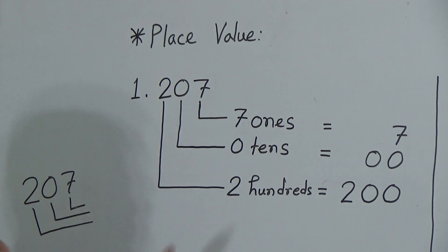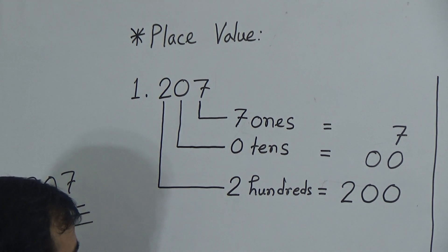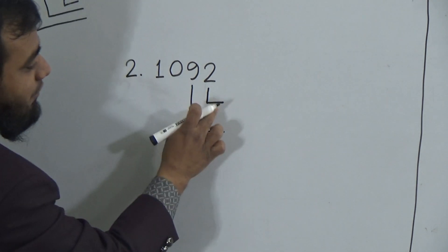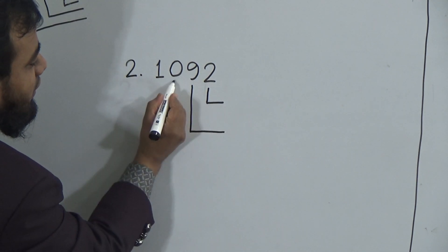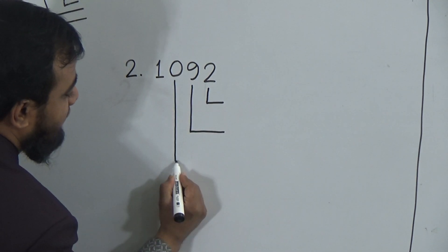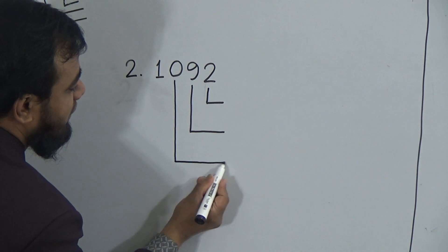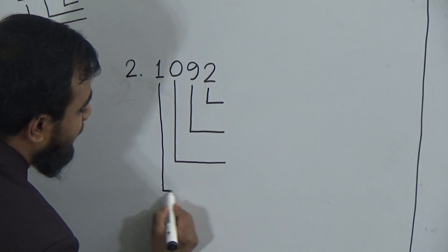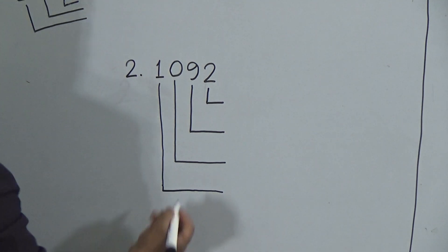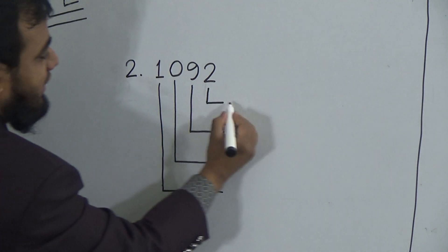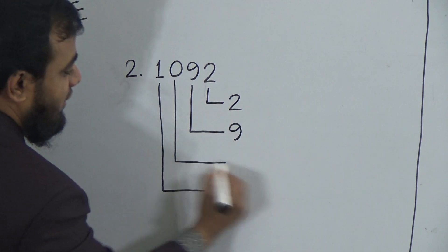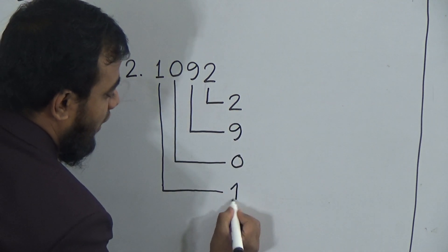Similarly, we will solve number 2 and number 3. First draw the lines nicely, giving gaps between them so we can write down the words. This line indicates digit 2, this line indicates digit 9, this line indicates 0, and this one is 1.